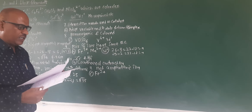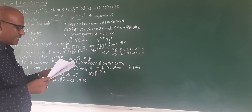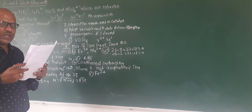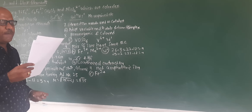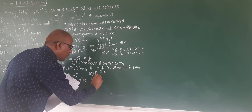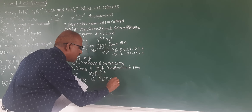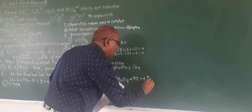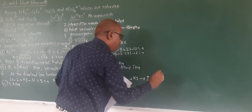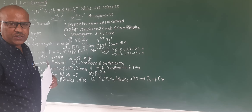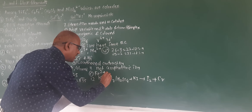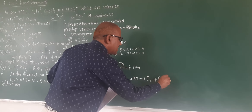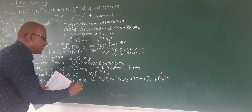Acidified potassium dichromate reacts with potassium iodide and oxidizes iodide to iodine. The oxidation state of chromium on the left side (in K₂Cr₂O₇) is +6. In the products, the oxidation state of chromium is +3. Therefore the correct option is C — plus 3.